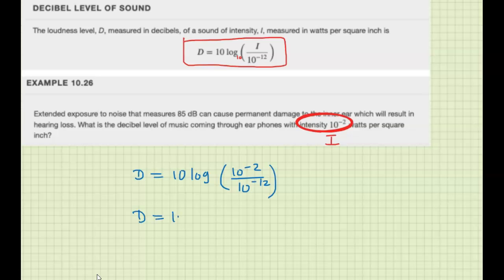All right, we're going to simplify this. So 10 log, 10 to the minus 2 minus negative 12. I'm subtracting exponents. 10 log of 10 to the 10. All right, this is base 10 right here.